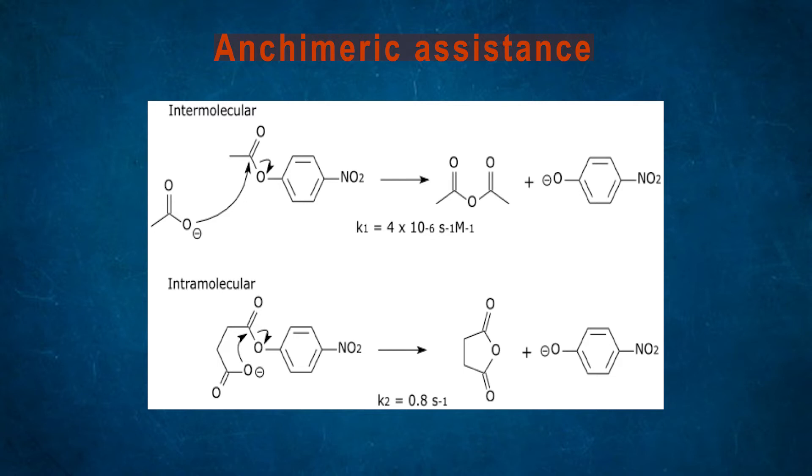But for intramolecular reaction, the rate becomes 0.8 s^-1. It reduces the entropy of reaction, makes ligation favorable, and increases the rate of reaction by aligning the reactive chemical groups and holding them and fixing them together.